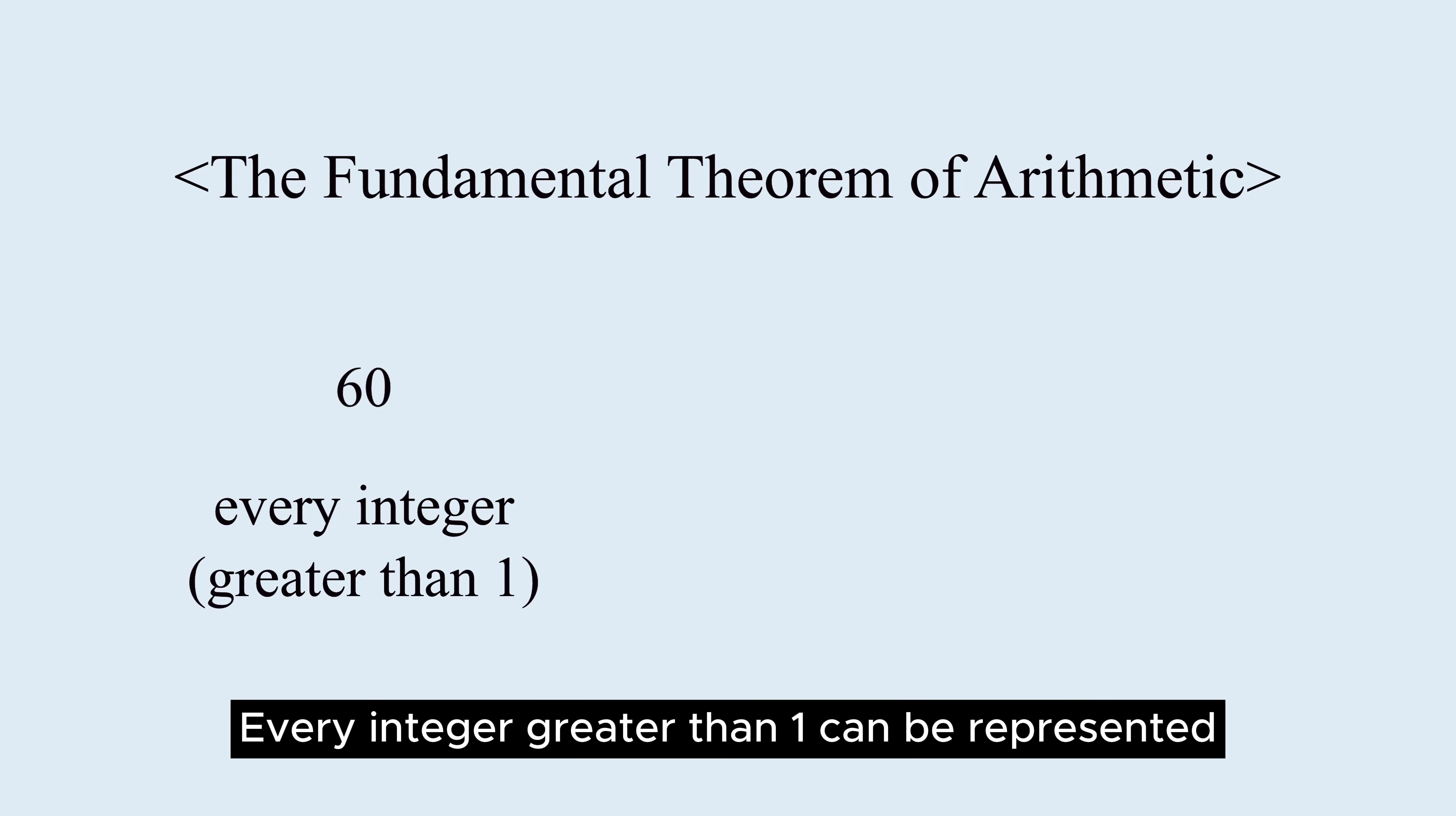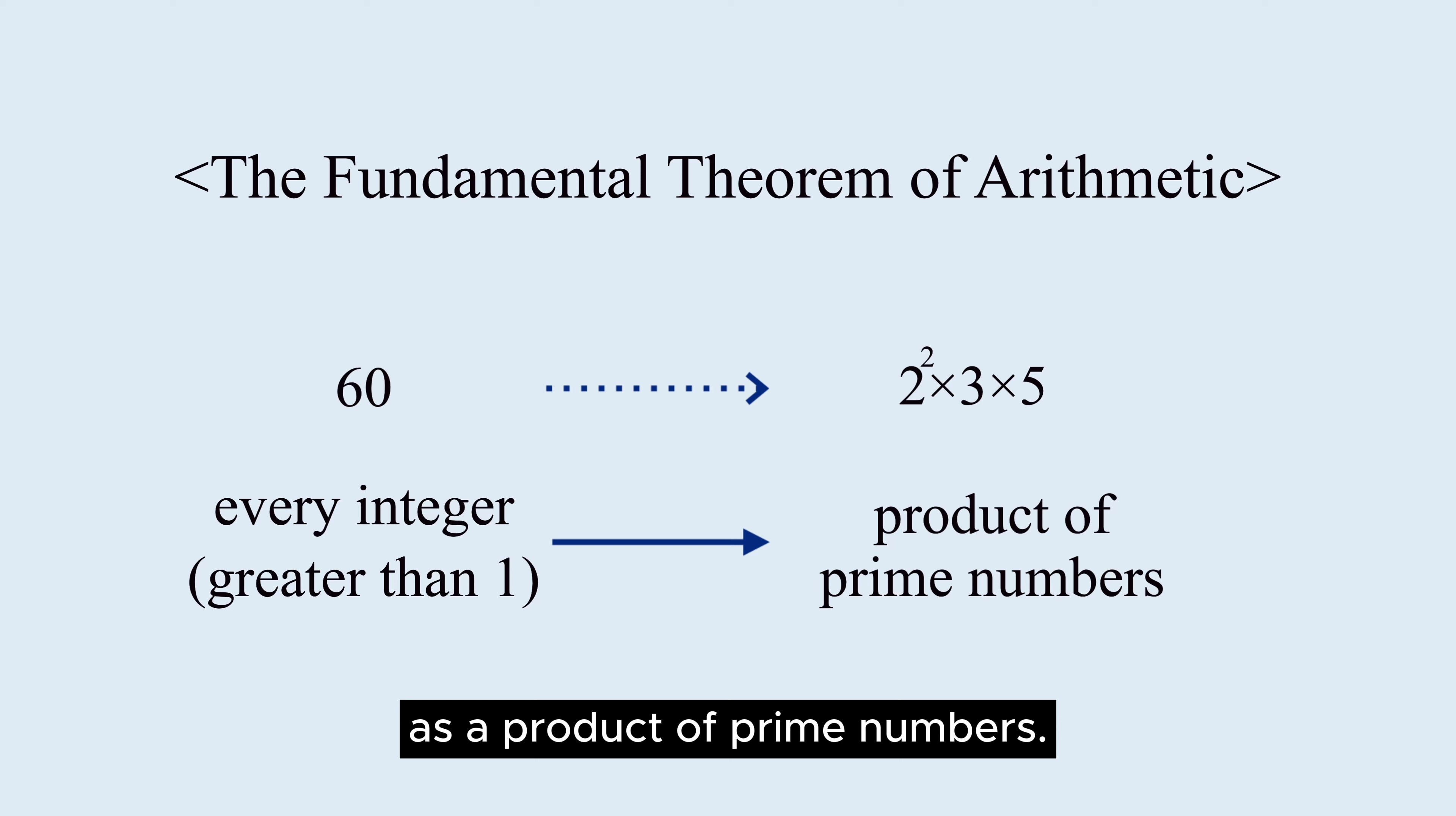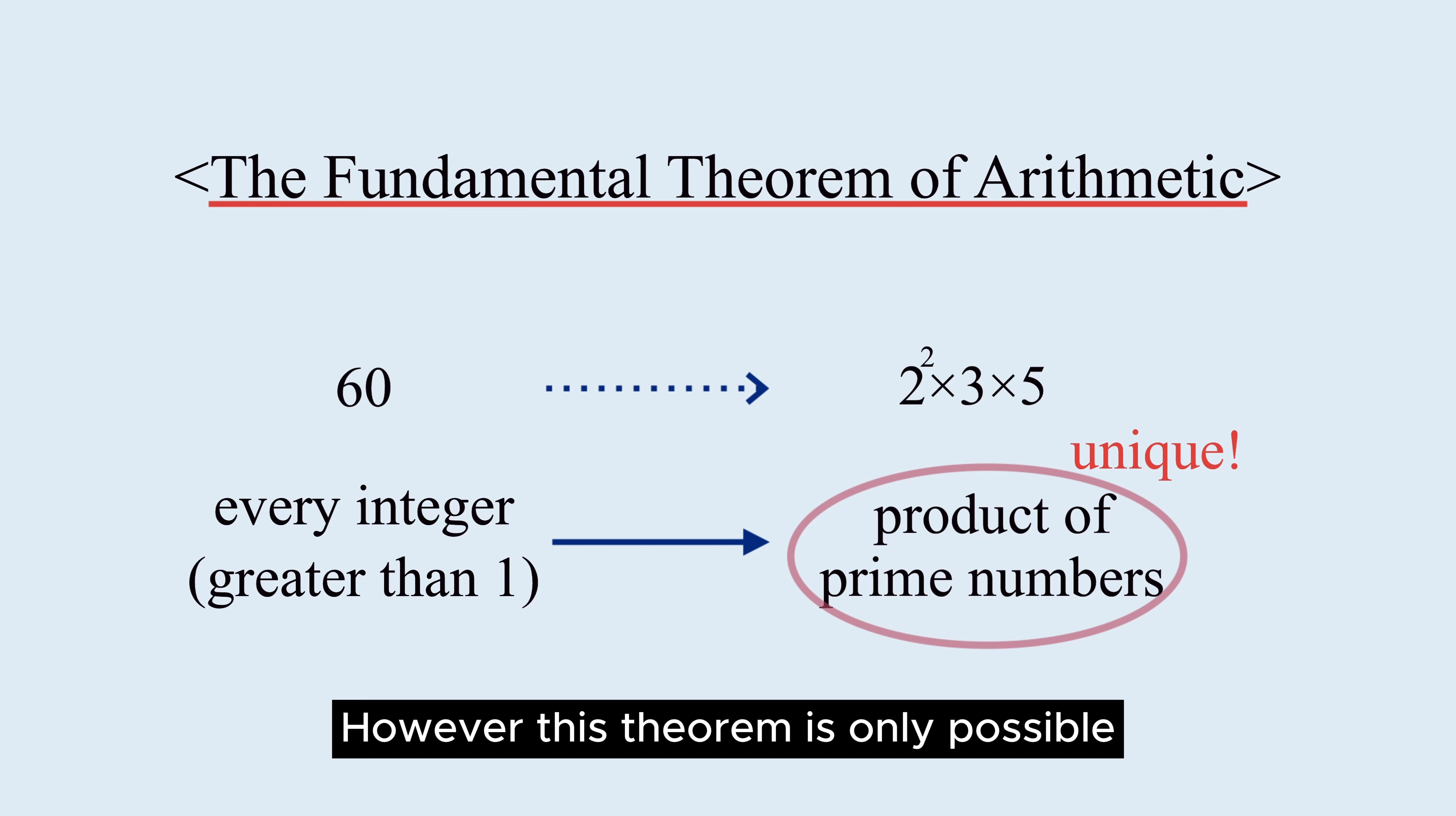Every integer greater than 1 can be represented as a product of prime numbers. Moreover, its form is unique. However, this theorem is only possible when 1 is excluded from prime numbers.